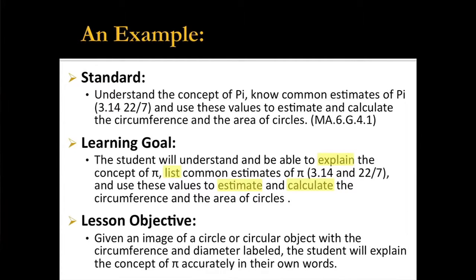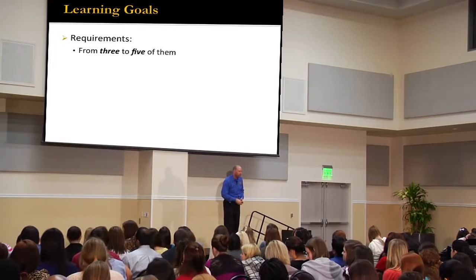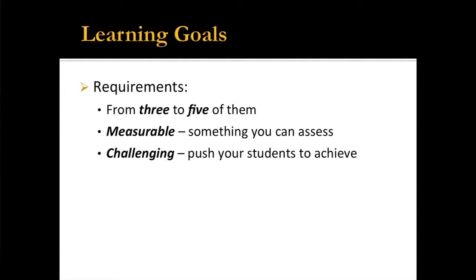These are vitally important for your learning goals: assessable verbs. If students explain, I can evaluate it. If they list, I can evaluate it. If they estimate or calculate, I can evaluate it. Those verbs are ridiculously important because they shape everything from that point on. The requirements are three to five learning goals; they have to be measurable — those assessable verbs are really important — and they have to be challenging.